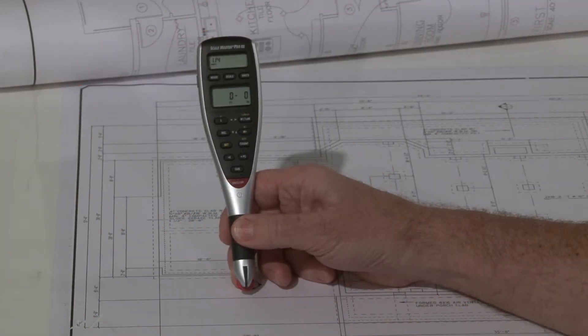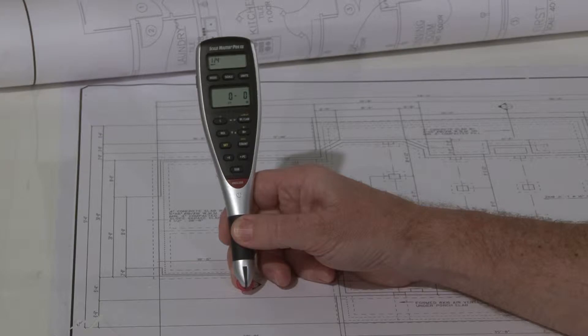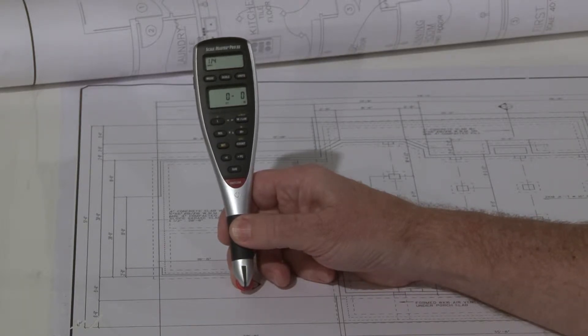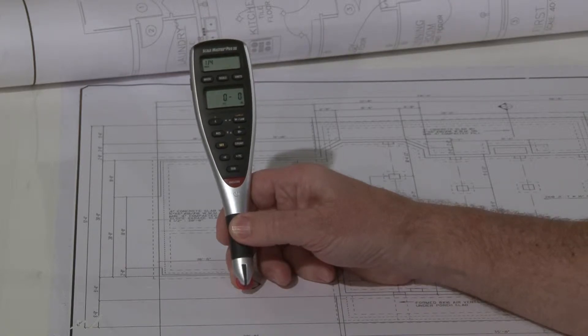Now let me show you how to set or change the height. The height is a value you need to have in there whenever you do a volume takeoff, whether it be 4 inches for a slab or 18 inches for a trench or 8 foot high for figuring surface area of sheet rock. You need to be able to set the height. So let me show you how to do that.